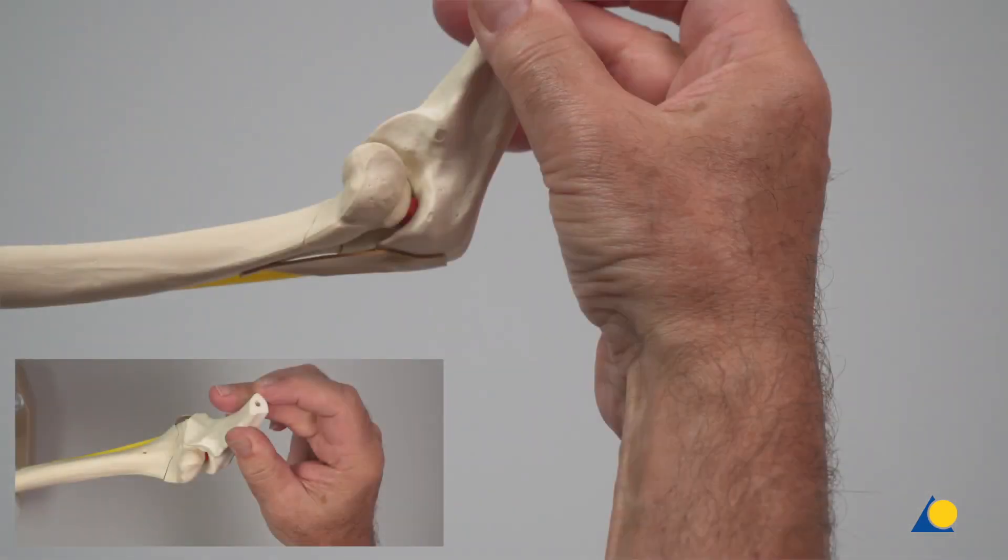In the clinical situation, the intact posterior periosteum helps in reduction and stabilization of the fracture when it is stretched while the elbow is flexed. Note that, as the periosteum is visible in this bone model, the correct reduction can easily be observed.